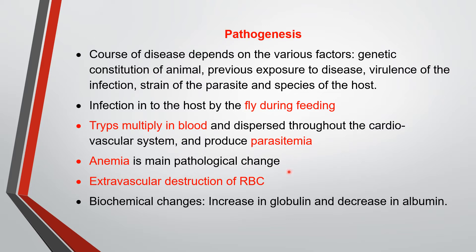Anemia is the main pathological chain. There is extravascular destruction of RBCs — it is not intravascular. The parasitized RBCs are phagocytosed by macrophages, monocytes, and the reticuloendothelial system. They are phagocytosed in the spleen, liver, and lymph nodes. So here, jaundice is not a major symptom. The biochemical changes observed are increase in globulin and decrease in albumin, which is also a characteristic finding.